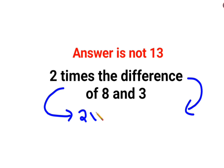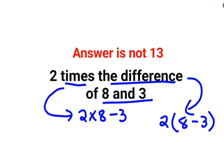One is 2 times 8 minus 3, another was 2 times 8 minus 3. Now look at the wording: two times the difference of 8 and 3. So here, this resemblance is correct and this is absolutely wrong.